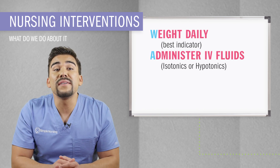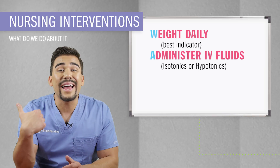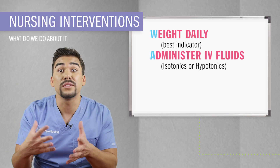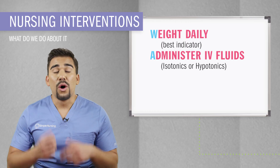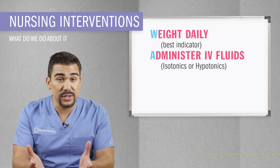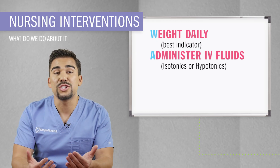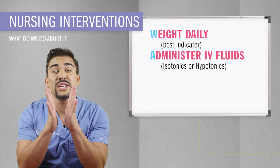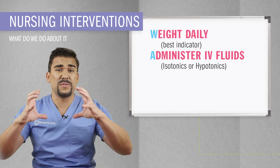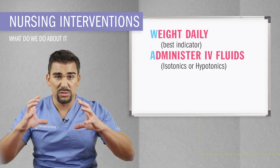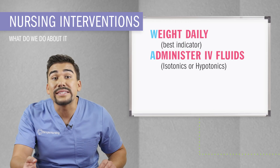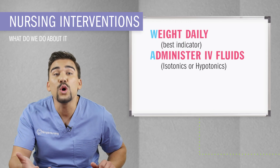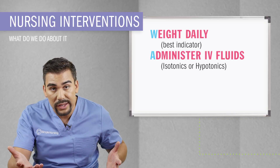A is for administer IV fluids. We usually provide isotonic fluids to get fluid back into the vascular spaces, or we can use hypotonic fluid solutions for cellular dehydration — rehydrating those dehydrated cells and turning them into big hefty hippos filled with water. That's why we use hypotonic fluids for hypotonic cellular dehydration.